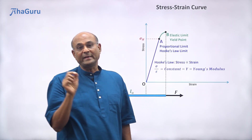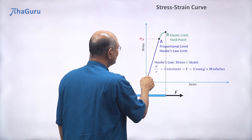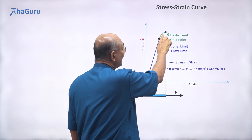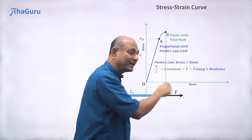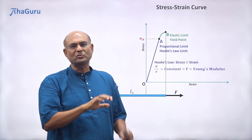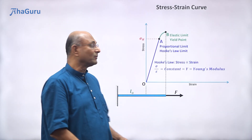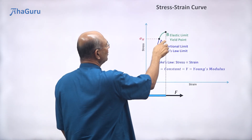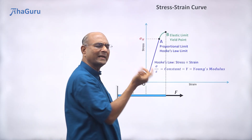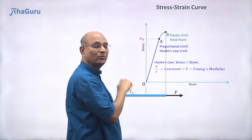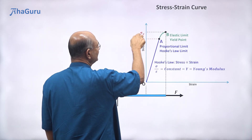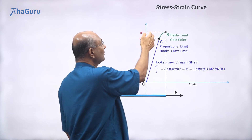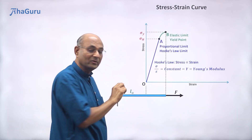Point B is called the elastic limit — from O to B, if you release the force the rod will come back to its original length. Point B is also called the yield point. At B, if you cross it, the rod gets permanently deformed. The corresponding stress is called sigma-Y, where Y stands for yield point.